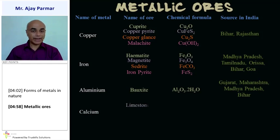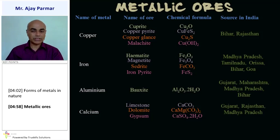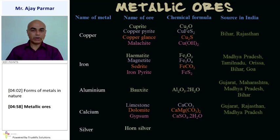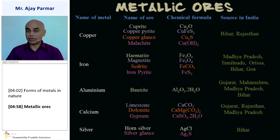For calcium — another very reactive metal — the ores are limestone (CaCO₃), dolomite (CaMg(CO₃)₂), and gypsum (CaSO₄·2H₂O), which is again a hydrated molecule. Calcium ores are found in Gujarat, Rajasthan, and Madhya Pradesh. For silver, the ores are horn silver (AgCl) and silver glance (Ag₂S), found in Bihar. As you can see, Bihar is very rich in mineral resources, especially for metallic ores.